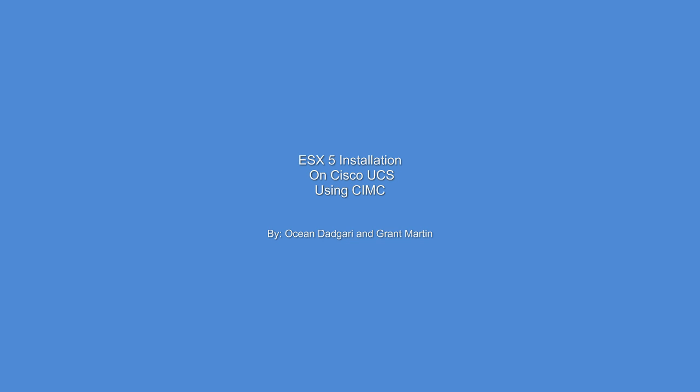In this video, we're going to install ESXi 5.0 using the CIMC, which is the remote access tool for the UCS C-Series and B-Series servers. We're going to be installing onto the C-Series servers, but the steps are the same for both since we'll be installing through the CIMC.